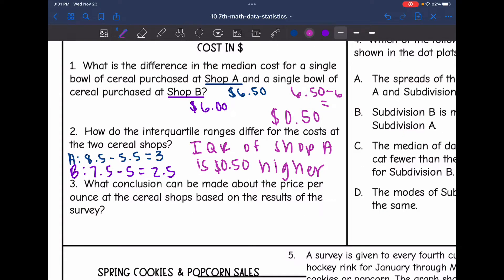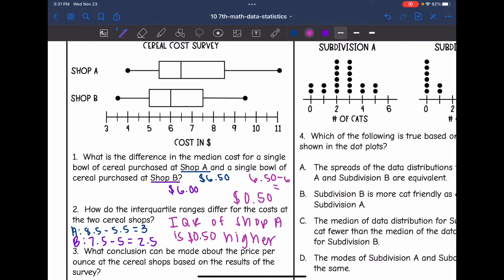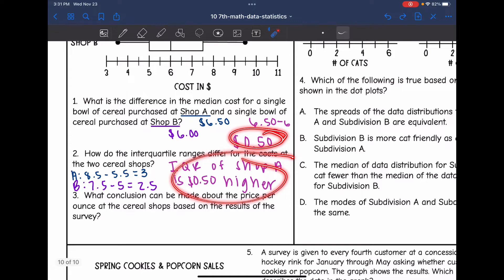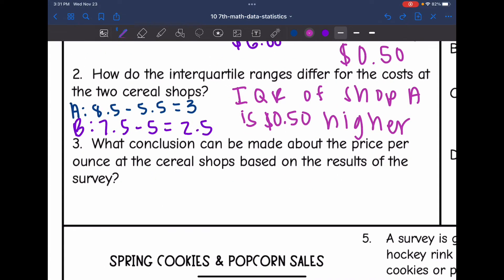Number three says, what conclusion can be made about the price per ounce at the cereal shops based on the results of the survey? I would say that Shop A overall has a higher price because it is skewed to the left. We have more of the data on the right, and the median and the IQR were higher. So I would conclude that Shop A has a higher price per ounce overall.